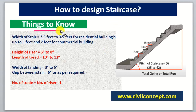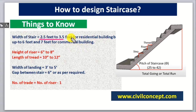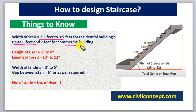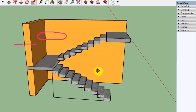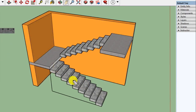First, the width of the staircase should be 2.5 feet to 3.5 feet for a residential building. For commercial buildings like factories and hospitals, it should be 6 feet to 7 feet. Here we will design for a residential building, so we take the width within that range. As seen in the 3D picture, this dimension is known as the width of the staircase.